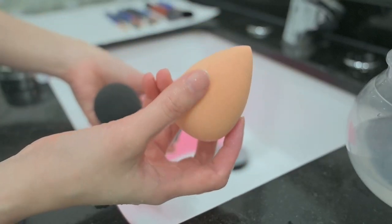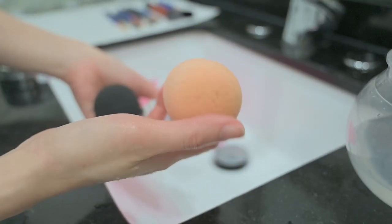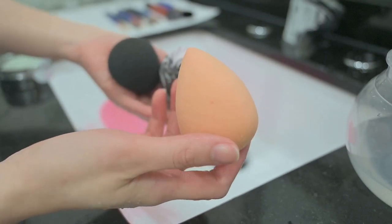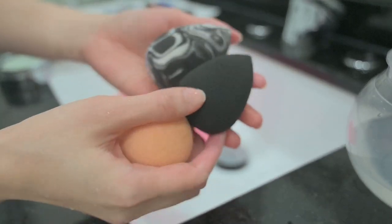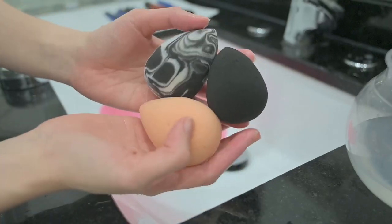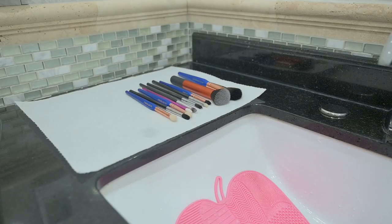After cleaning, allow the sponges to air dry completely before storing it in a clean and dry place with good ventilation. Don't put them in a closed makeup bag or your bathroom. Now back to the brushes.